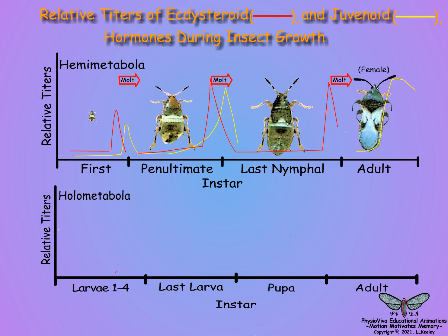Here is a graph for the relative titers of ecdysteroids and juvenoids at the molts in holometabolous insects. Juvenoids are high in embryos prior to egg hatching to ensure the first instar is a larva. As in hemimetabolous species, juvenoids are present at each larval-larval molt through the fourth instar to ensure the resulting instar remains a larva.